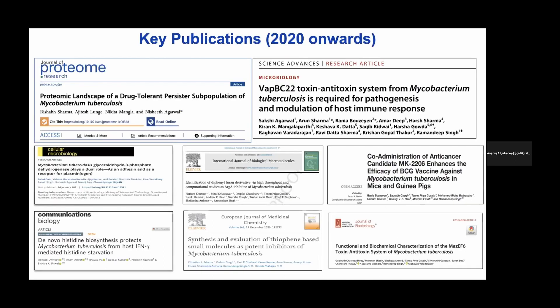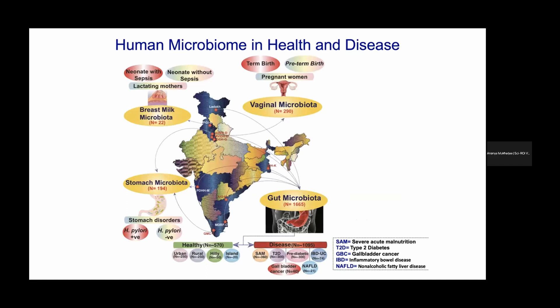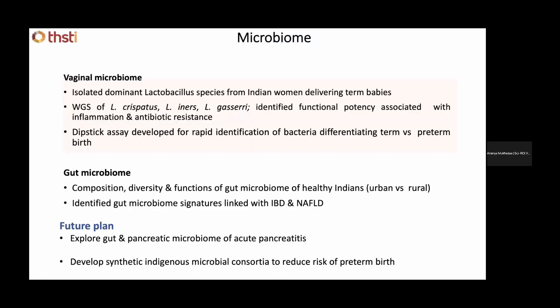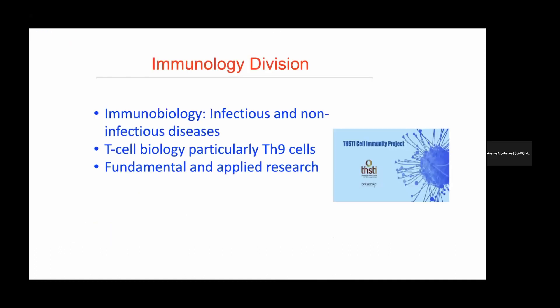The Microbiome program, primarily led by Dr. Das, focuses on the microbiome of breast milk, vaginal microbiota in preterm pregnancy, stomach and gut microbiota, and inflammatory bowel disease. He has compared microbiota from Indian healthy subjects with those from Denmark and Japan to identify ethnicity-specific and food habit-specific signatures. Additionally, the research explores how Indian microbiota contains drug-resistant genes that could potentially pose a future public health threat.